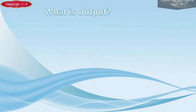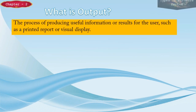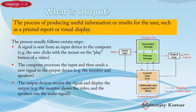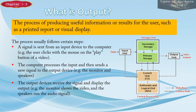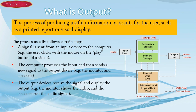Output is a process of producing useful information or results for the user, such as a printed report or visual display. The process usually follows certain steps. The first step is a signal is sent from an input device to the computer — for example, the user clicks with the mouse on the play button of a video. The second step is the computer processes the input and sends a new signal to the output devices, for example a monitor and a speaker. The third step is the output devices receive the signal and display the output — for example, the monitor shows the video and the speaker runs the audio signal.